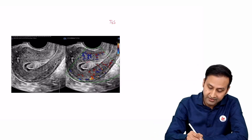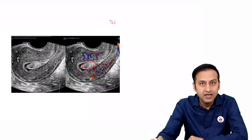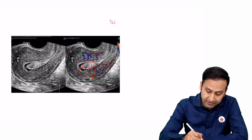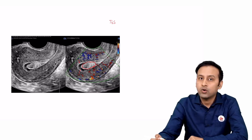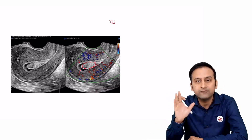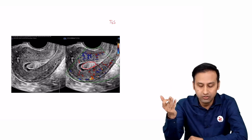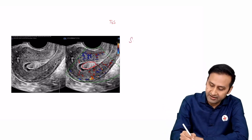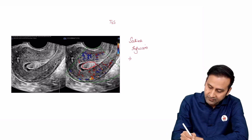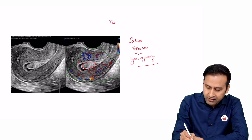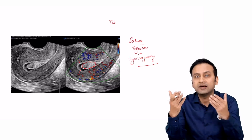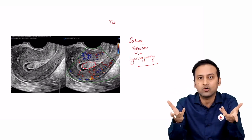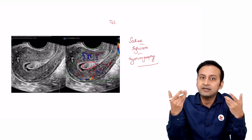Now look at this transvaginal sonogram. There is an echogenic lesion inside the endometrial cavity, but we also see some black-colored collection in the endometrial cavity — a black collection is fluid. This investigation, in which we artificially put fluid inside the endometrial cavity for better visualization of a polyp or endometrial pathology, is called saline infusion sonohysterography. The saline looks black while the polyp is echogenic, producing contrasting colors for better assessment and detection of lesion size.